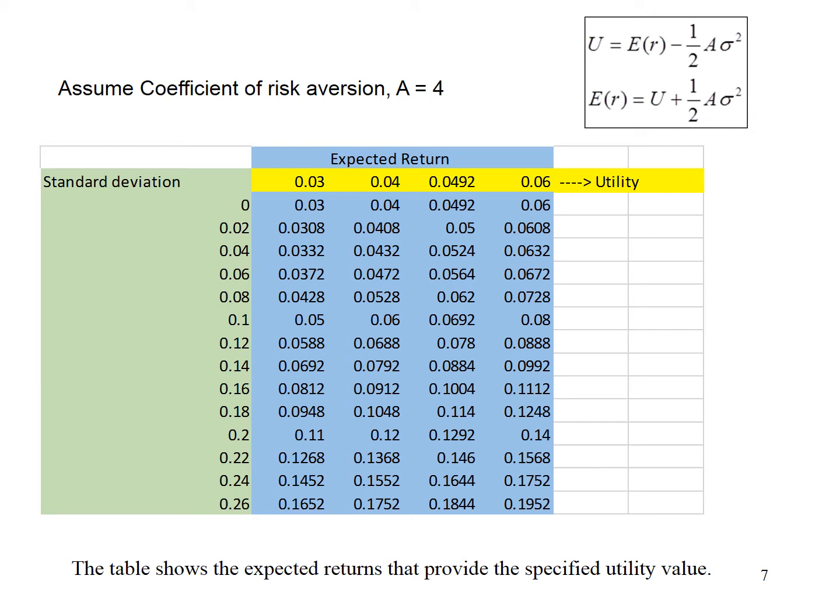In this table, my objective is to calculate the expected return. I use the coefficient of risk aversion of 4 and different level of standard deviation from 0 to 0.26, utility of 0.03, 0.04, 0.0492 and 0.06 to compute the expected return. To help you see clearly, I have highlighted the standard deviation in green colour, utility in yellow colour and expected return in blue colour. I use the formula for expected return in the box. This working is meant to derive the indifference curve. To draw the indifference curve, the value for x-axis is standard deviation and the value for y-axis is expected return. That is the reason why I am doing the calculation.